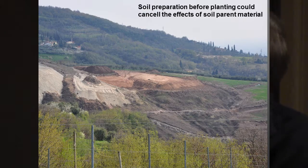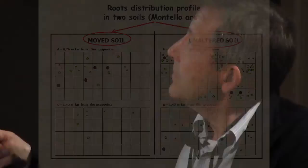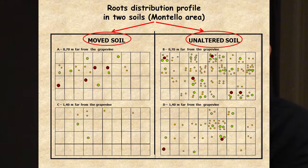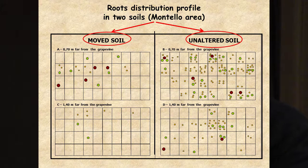Now, two more aspects. Soil preparation: soil preparation before planting could cancel the effect of soil parent material. In our area this is a big problem, because when making new plantations, we try to have a very large vineyard with a constant slope, and so we do significant earthworks. My question is: are you really looking for the real geological influence on wine by doing this work? We are sure this is not the right system to valorize soils and geology. When we are in such a situation, the roots are affected — there are no roots in the moved soil, but in the unaltered soil there are many roots.